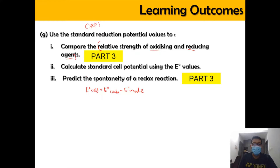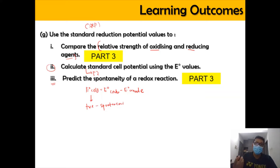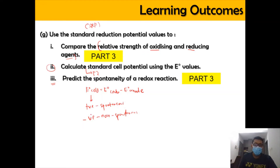We've done learning outcome number 2 in part 2 of the video. In this video, we're going to look into number 3, which is to predict the spontaneity of the redox reaction. If the E0 cell value is positive, the reaction is spontaneous — it occurs without requiring extra energy. If the E0 cell is negative, it is a non-spontaneous reaction and requires extra energy, such as a battery. If E0 cell is zero, the reaction is at equilibrium.